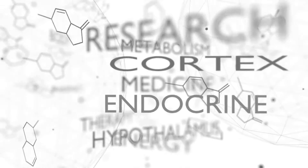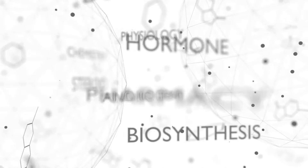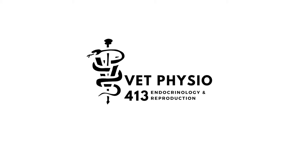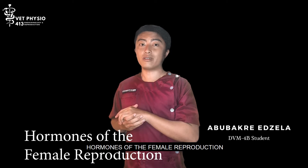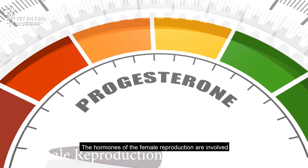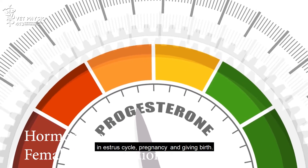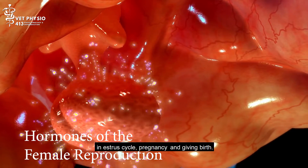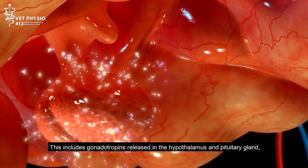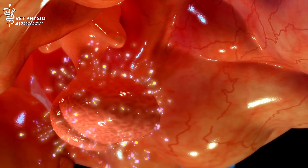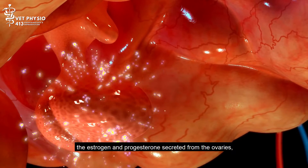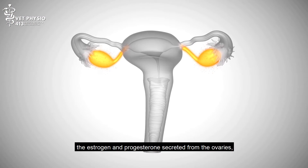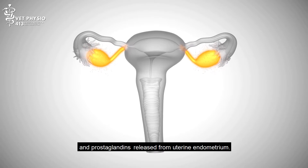Hi, we will discuss the Hormones of the Female Reproduction. The hormones of the female reproduction are involved in the estrous cycle, pregnancy, and giving birth. This includes gonadotropins released in the hypothalamus and pituitary gland, the estrogen and progesterone secreted from the ovaries, and prostaglandins released from the uterine endometrium.